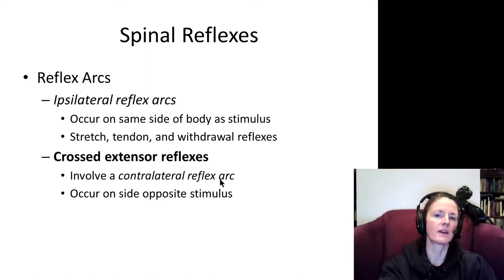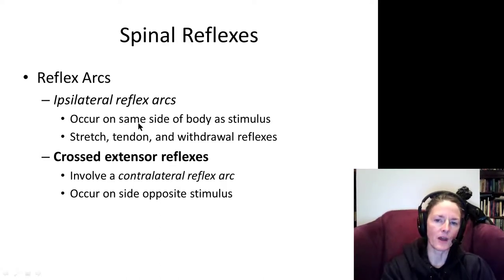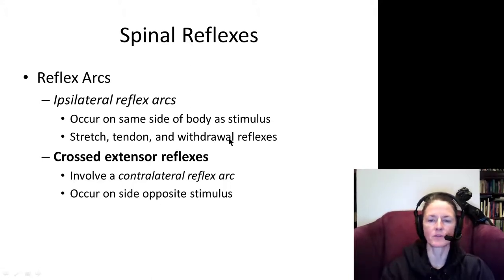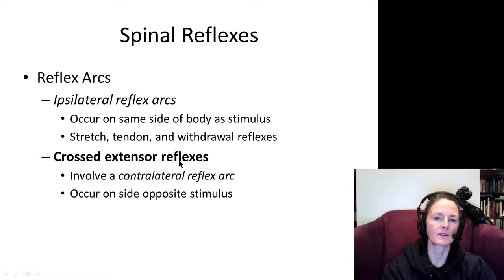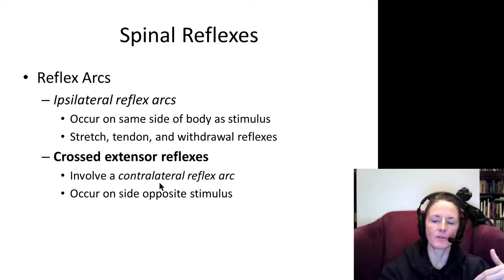When we get more complicated reflexes, we involve both sides of the spinal cord — these are called contralateral reflex arcs. The cross extensor reflex is an example. Ipsilateral reflexes occur entirely on the same side of the body; the stretch reflex, tendon reflex, and the hand withdrawal reflex are all ipsilateral. But the crossed extensor reflex is a contralateral reflex — one side of the body does one thing and the opposite side does the opposite.